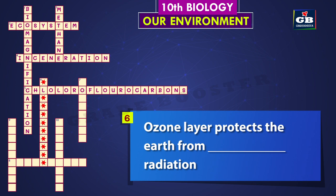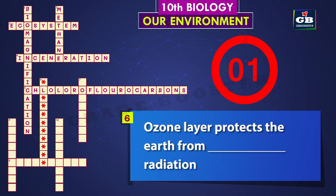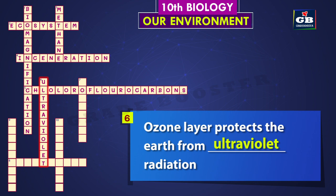Six down: ozone layer protects the earth from dash radiation. The answer is ultraviolet. Ozone layer protects the earth from ultraviolet radiation.